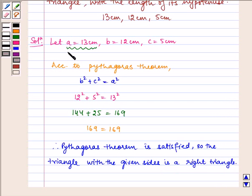And hence, the hypotenuse of the triangle is 13 cm, that is the largest side.